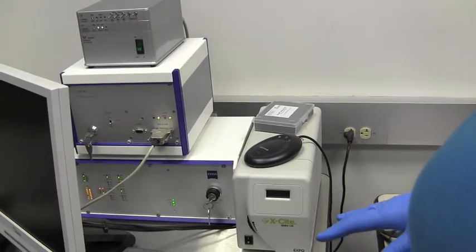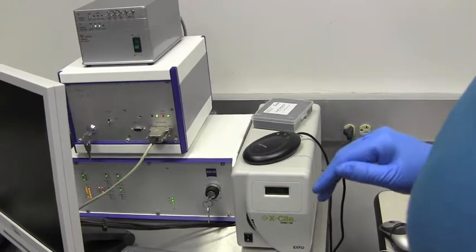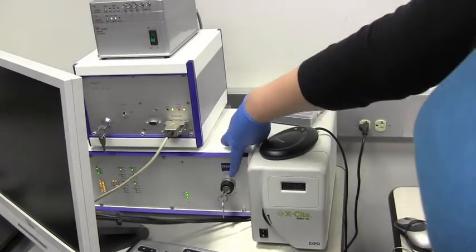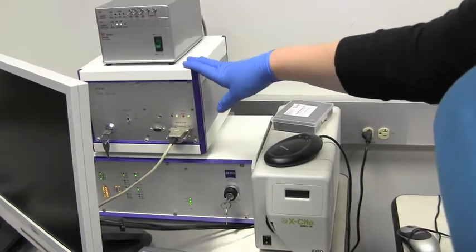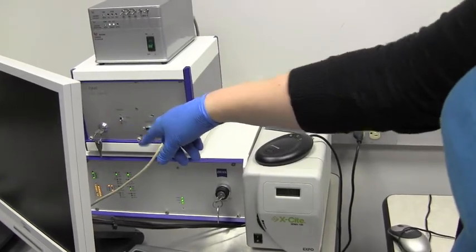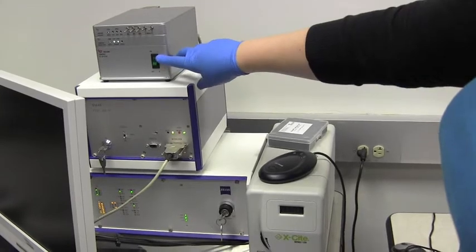Alright, so once you gain access to the room, to the right of the actual microscope are these three boxes. The first controls the actual microscope, the stage, and the laser, and you turn that on first using this key to the on position. The second box is the laser power control, which you turn on with the key over there, and then this controls the filters. That's turned on with the toggle switch.